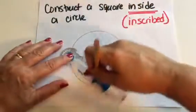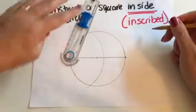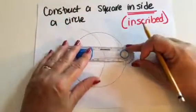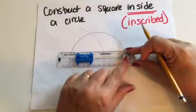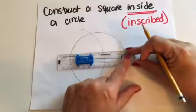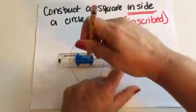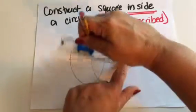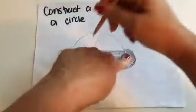and then I'm going to switch to the other endpoint of my diameter. Same thing. Put the compass on the endpoint, use my pencil to swing that arc, looking for those two points of intersection.